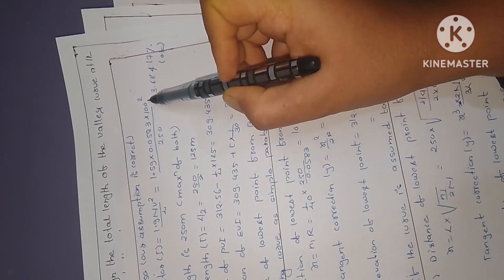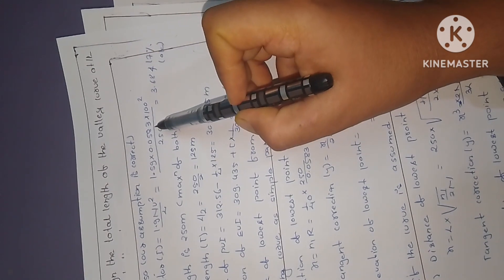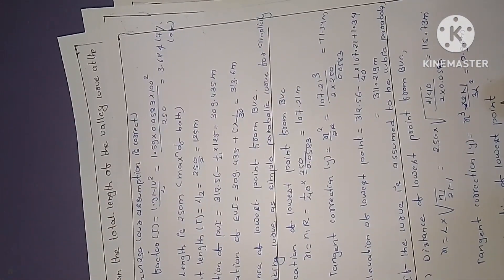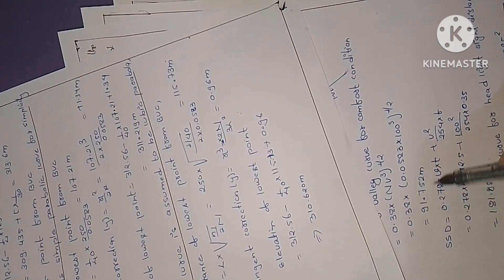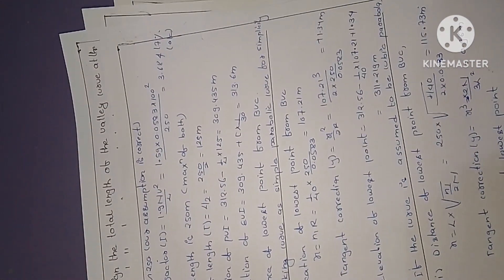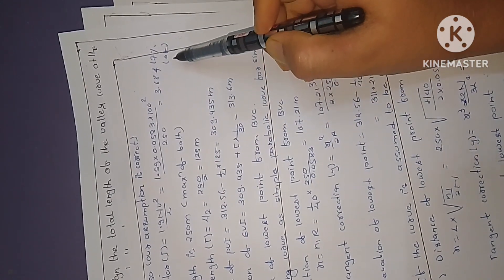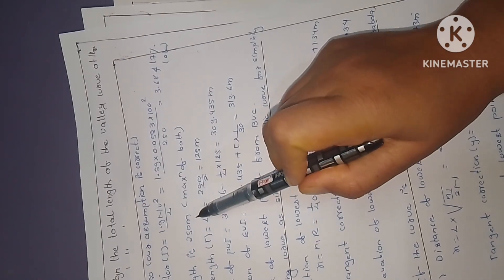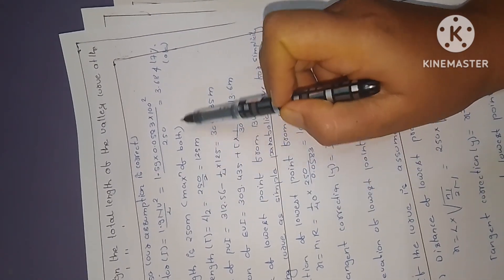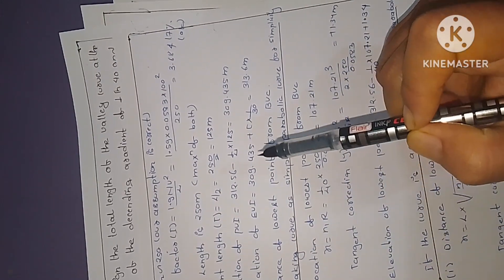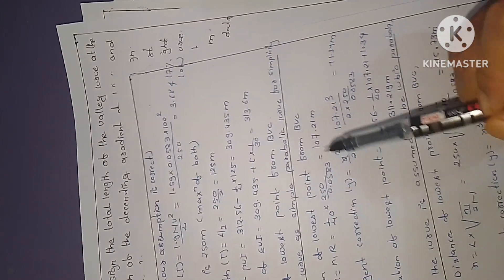Comparing both conditions, the larger value governs the design. The maximum of the two computed lengths is taken as the design length. The value works out to approximately 250 m as the length of the valley curve.